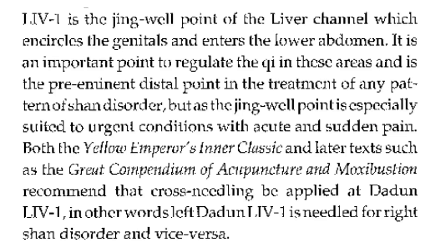Liver 1 is the Jing Well point of the liver channel, which encircles the genitals and enters the lower abdomen. It is an important point to regulate the Qi in these areas and is the preeminent distal point in the treatment of any pattern of shan disorder. As the Jing Well point, it is specially suited to urgent conditions with acute and sudden pain. Both the Yellow Emperor's Inner Classic and later texts recommend that cross-needling be applied at Liver 1 — the left Liver 1 is needled for right shan disorder, and vice versa.